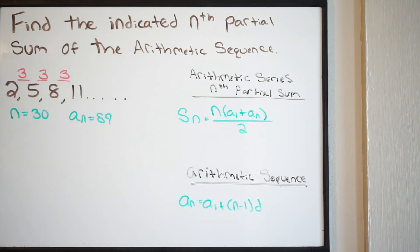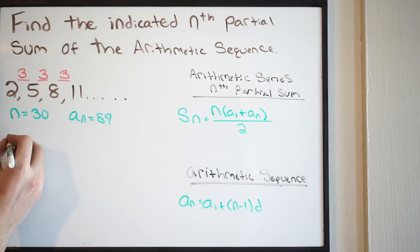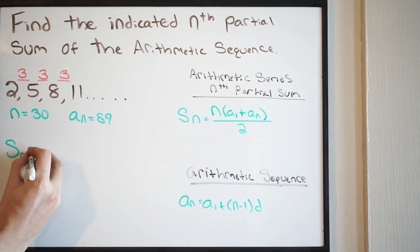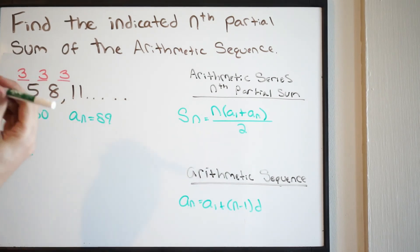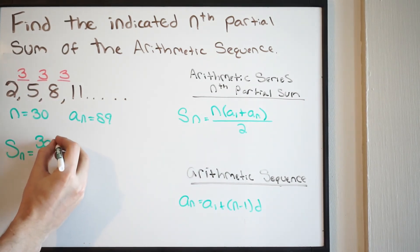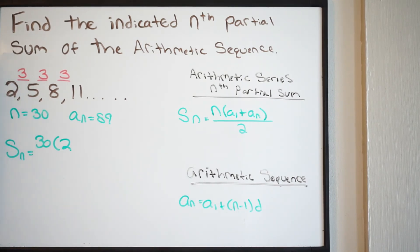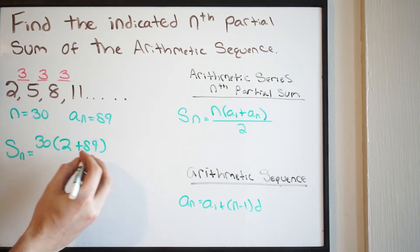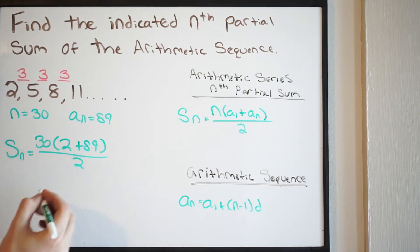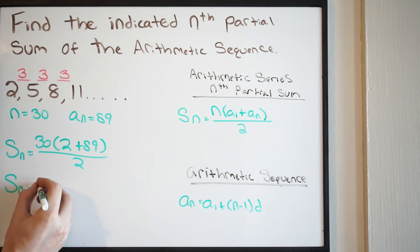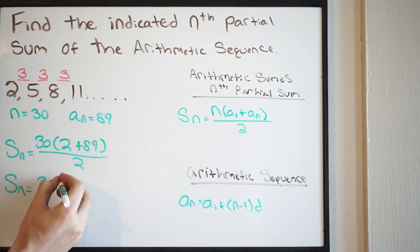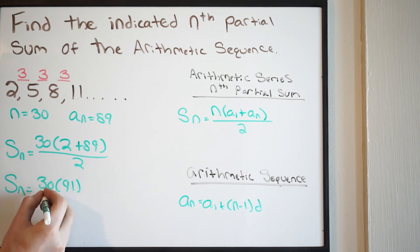Here's our equation — it's called the nth partial sum of an arithmetic series. S(N) = N * (A(1) + A(N)) / 2. N is 30, A(1) is our first term which is 2, and A(N) is what we just determined: the 30th term has a value of 89. So we get S(N) = 30 * (2 + 89) / 2, which gives us 30 * 91 / 2.